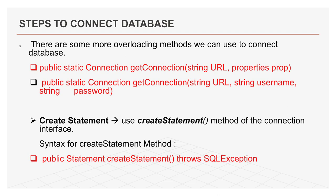The third overloaded method is: public static Connection getConnection(String url, String username, String password). In this case, we pass the username and password as parameters. It is more secure and we connect to the database with a specific user.